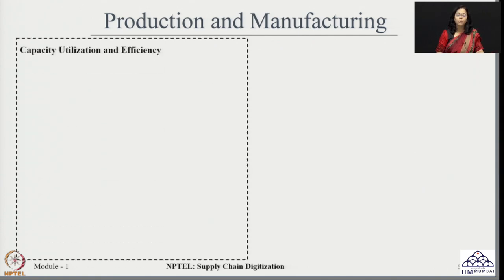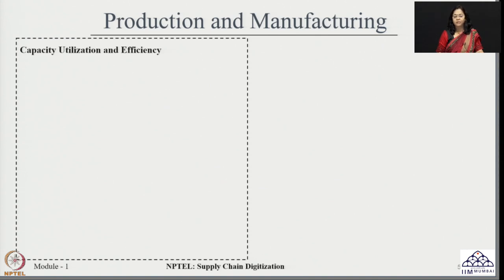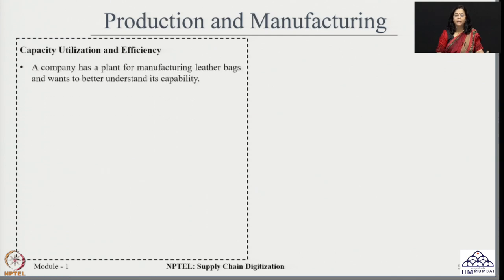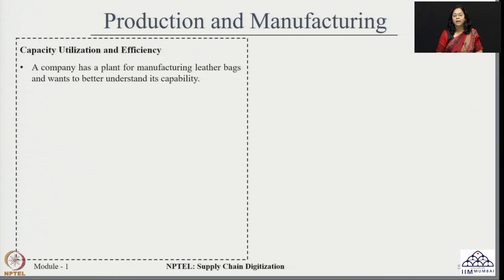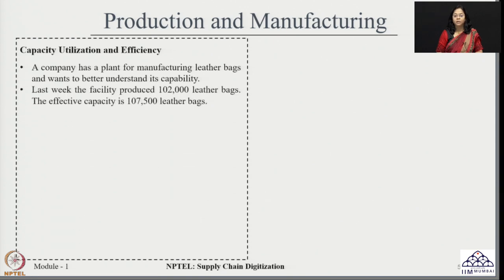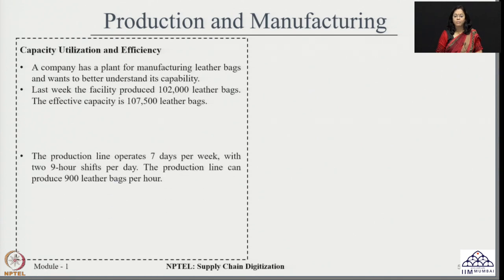We will look at a simple example of how to calculate capacity utilization and efficiency in a production environment. Consider a company engaged in manufacturing different types of leather bags who are trying to understand their capability. The data collected shows that in the last week, the facility was able to produce around 1,02,000 leather bags, whereas the effective capacity is around 1,07,500 for making the same type of leather bags.